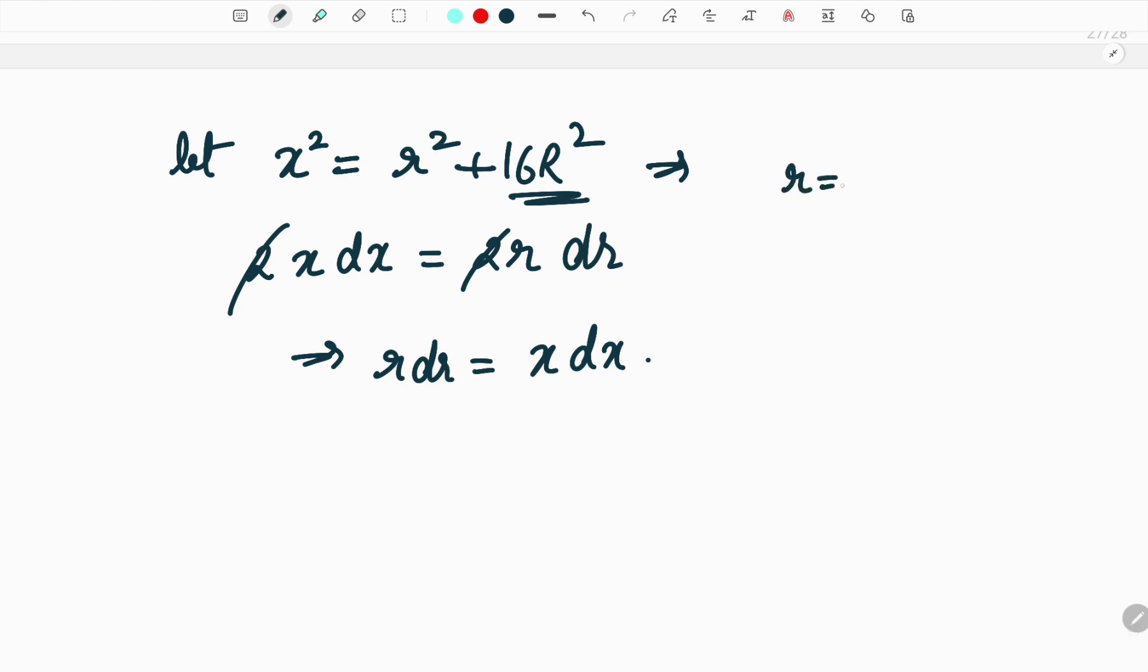So your integral will change but what about the limits? So when small r is equal to 3r what is x value? So when I substitute 3r here I will get 9r square. 9 plus 16 is 25, square root of 25r square will be 5r. So when r is equal to 3r, x is equal to 5r. So this is the first lower limit.